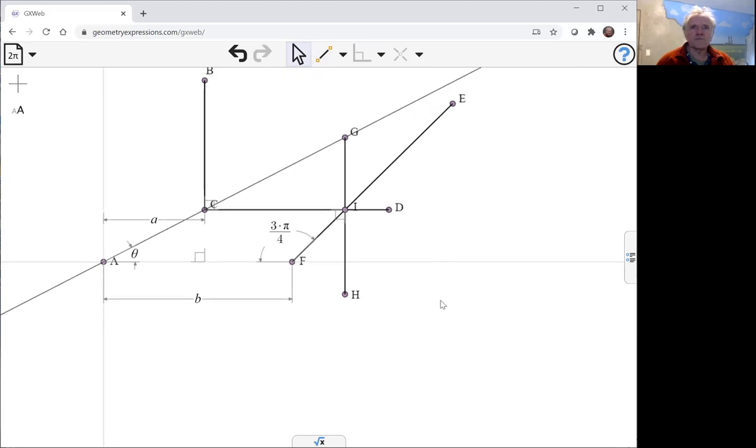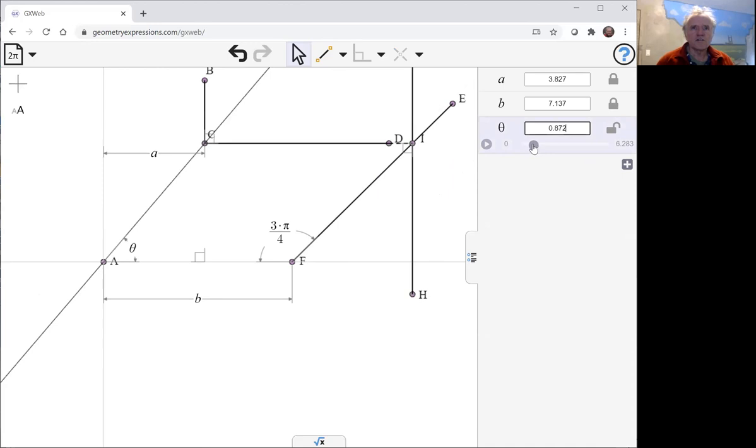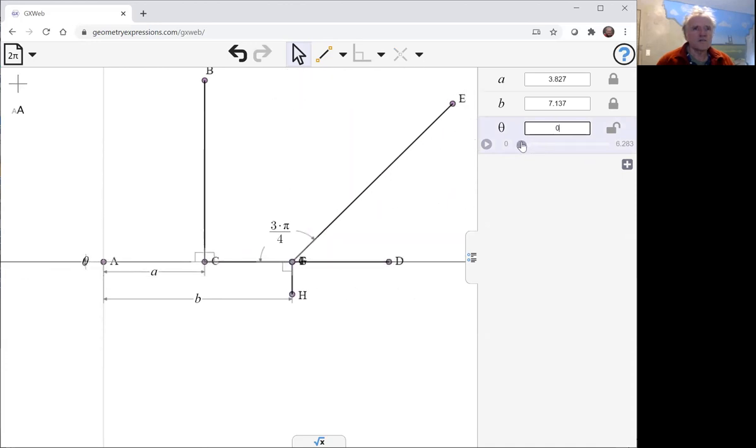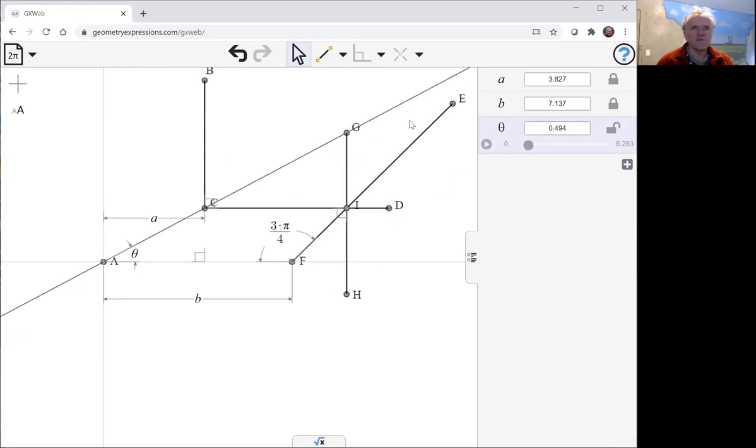Now with that in place, let's just see what happens if we change theta. We see that various things seem to move around. What's the point that's going to draw out our curve? It's this point G. So let's take a look at how that varies with theta.